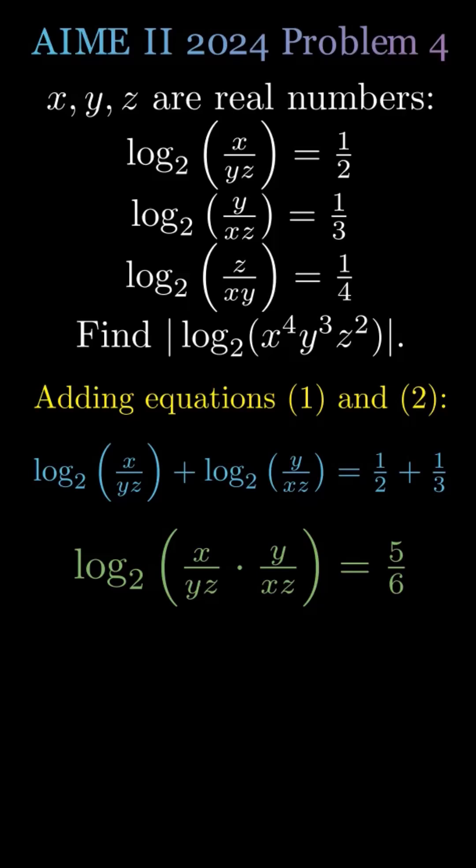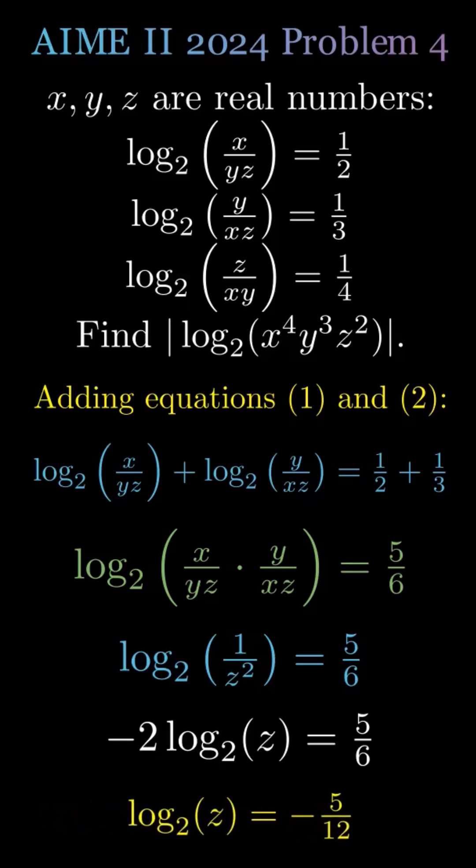Since the fractions simplify, log base 2 of 1 divided by z squared equals 5 sixths. Rewriting, negative 2 log base 2 of z equals 5 sixths. Log base 2 of z equals negative 5 twelfths.